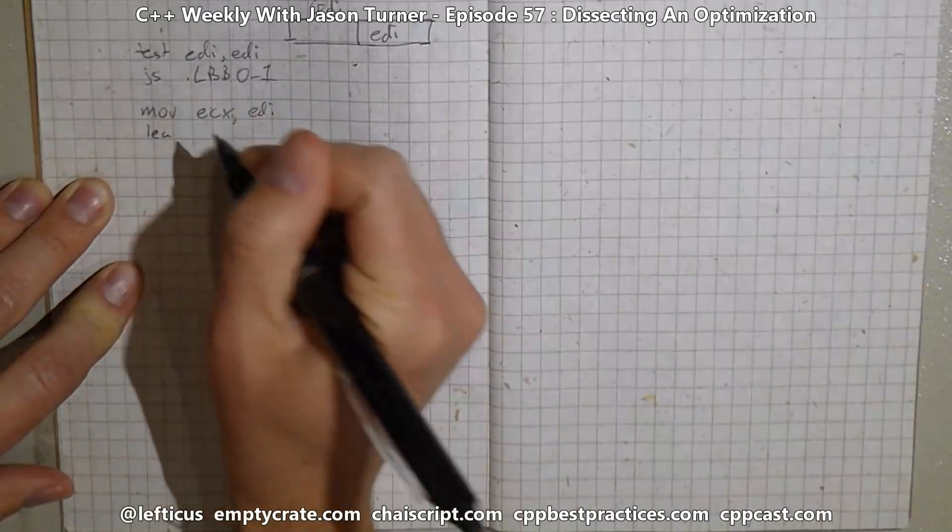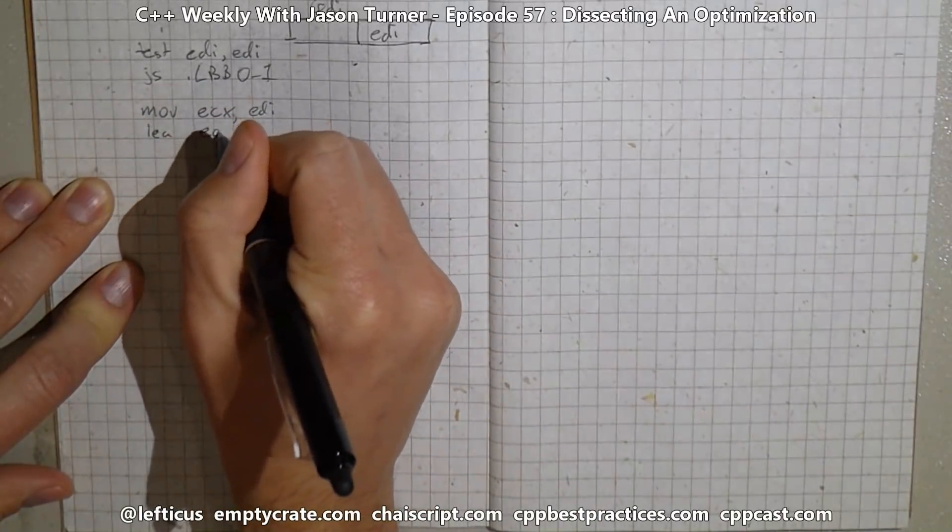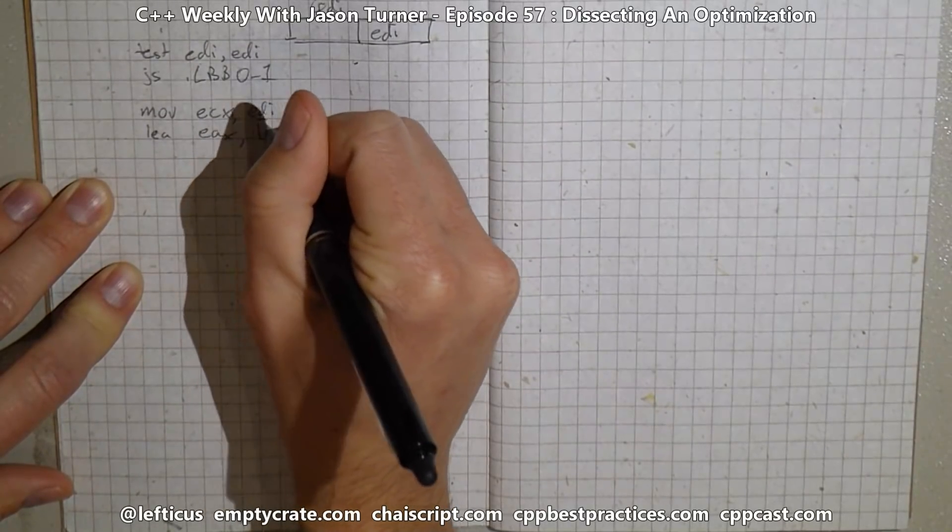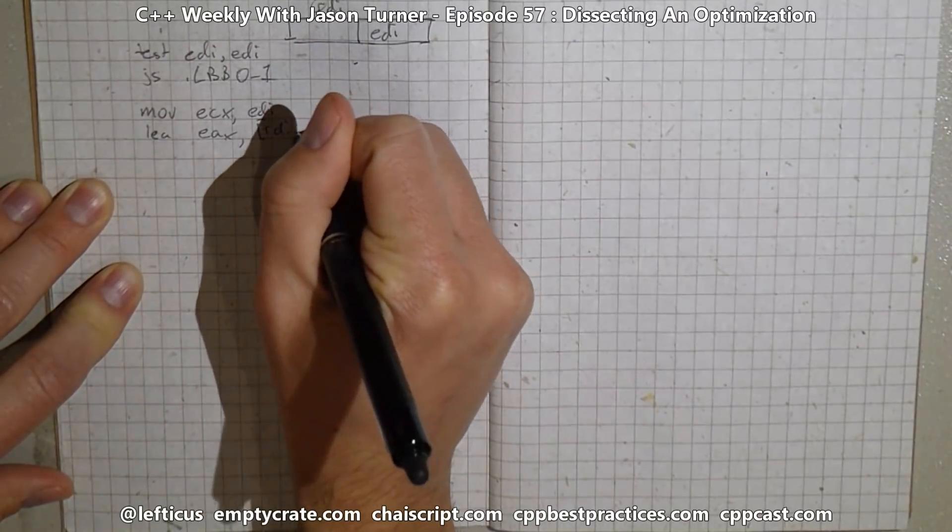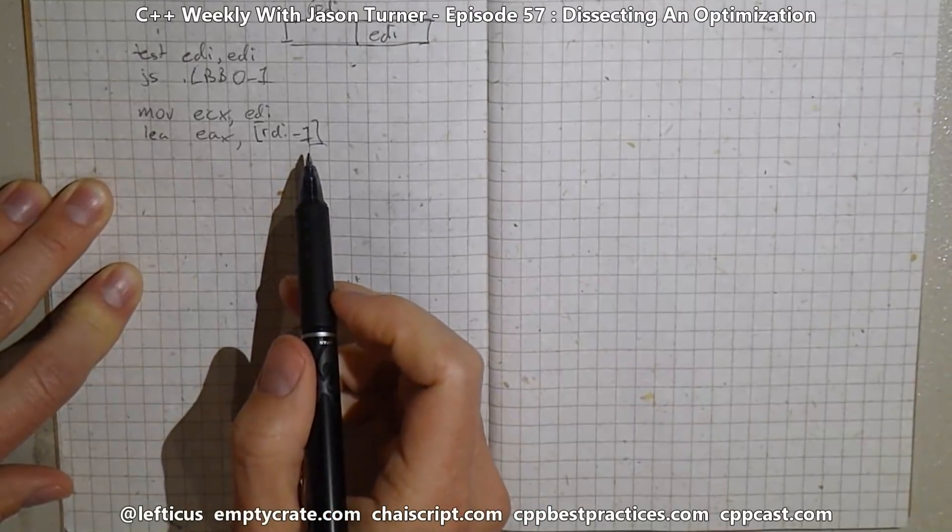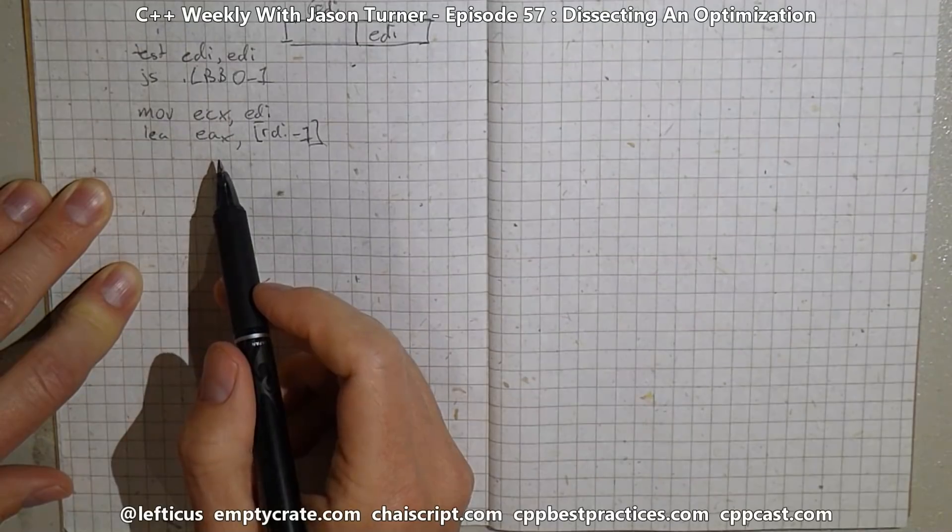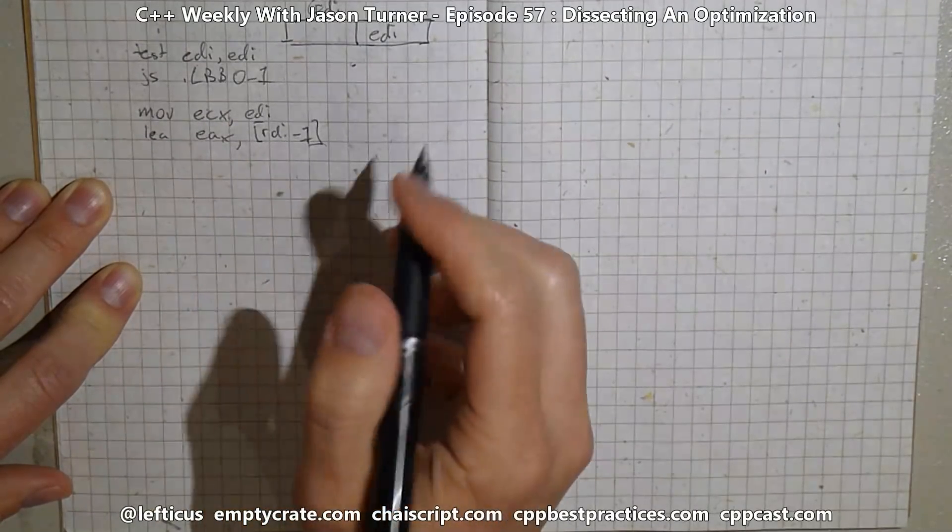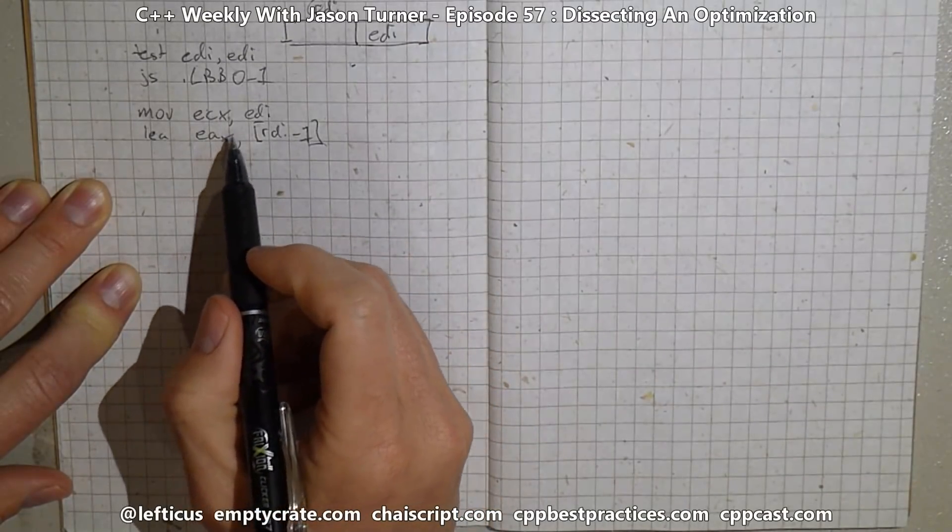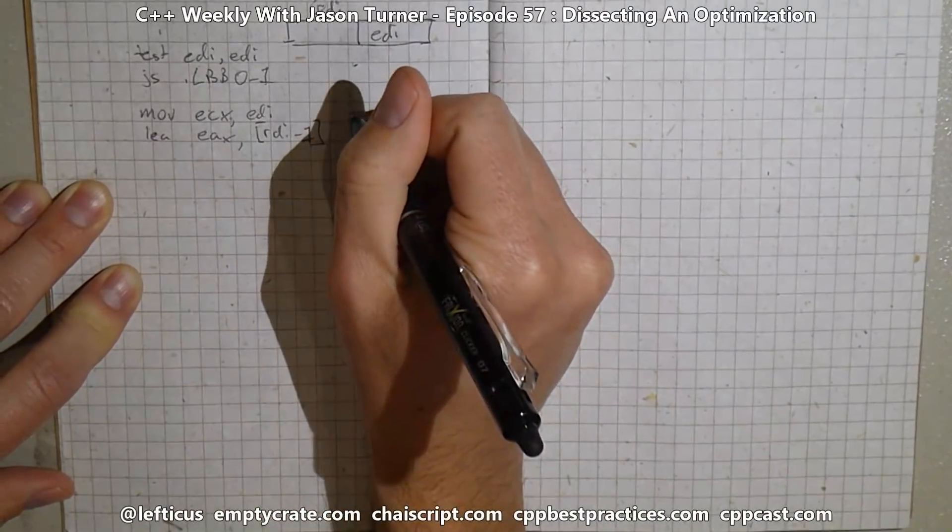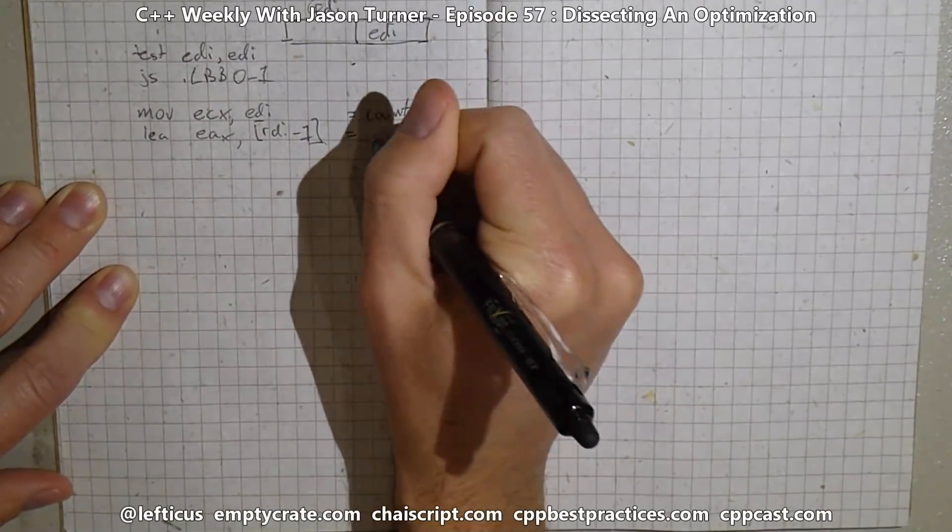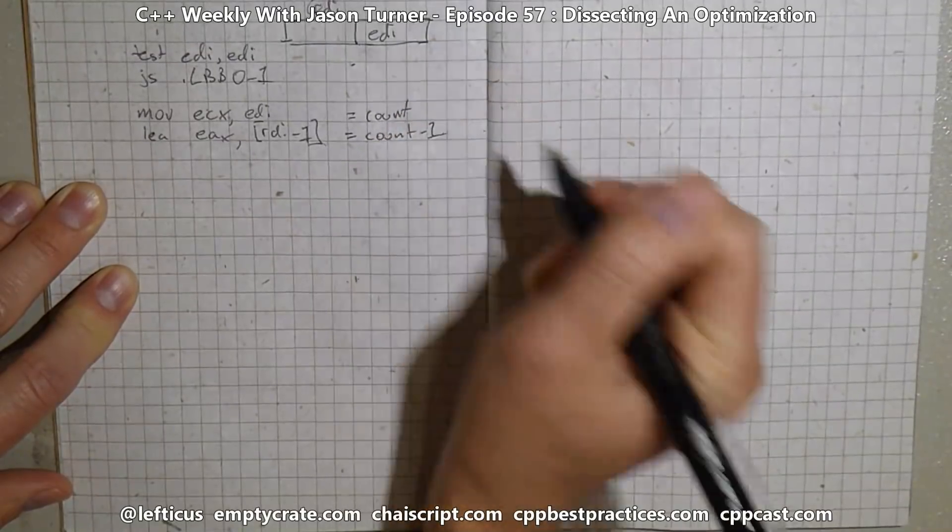LEA says perform some addition, subtraction, multiplication as if you were going to do an indirect memory lookup. But don't actually do the indirect memory lookup, just do the work. So now we're saying ECX is equal to our original count that came in, and EAX is equal to our original count minus one. So ECX equals count, EAX equals count minus one.